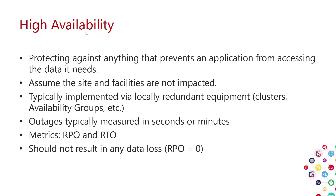Outages are typically measured in seconds or minutes. Your metrics are RPO — recovery point objective — meaning after an interruption, how close can you get back to the point you were at when things went bad? And RTO — recovery time objective — how long does it take to get back online? You shouldn't result in any data loss; a good HA solution gives you an RPO of zero and an extremely low RTO.